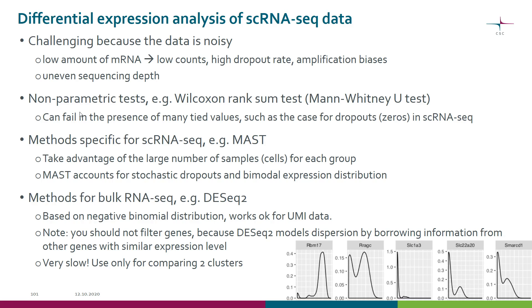Finding marker genes is challenging because single cell RNA-seq data is noisy. The starting material is very low, hence we get low counts. We also get high dropout rates, so there are many genes that are expressed but we don't detect the expression. There are also amplification biases and uneven sequencing depth.